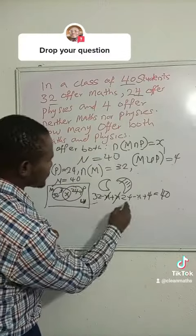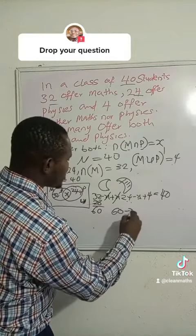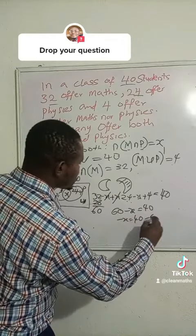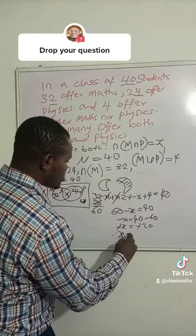So if this x comes to this x, we are going to minus x. So 32 plus 24 plus 4, that is 60. So we have 60 minus x equals 40. If this moves to this, it becomes minus 60. So we have minus x equals minus 20. Multiply through by minus, so therefore x equals 20.